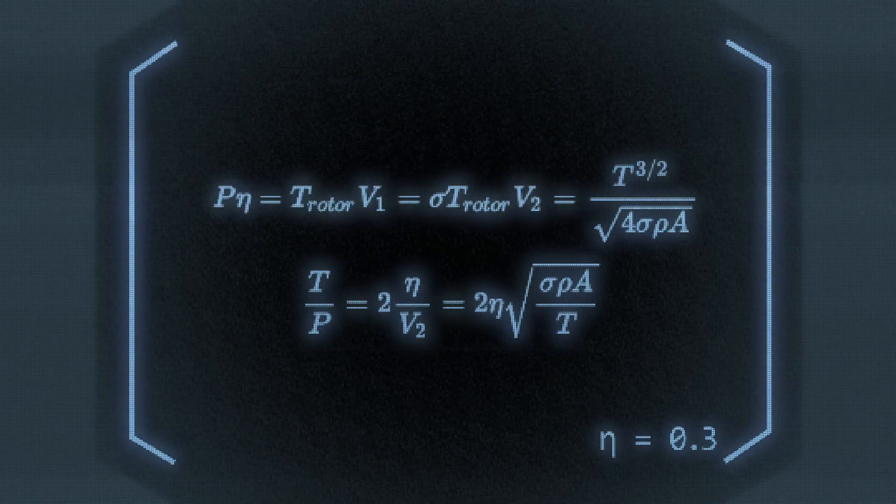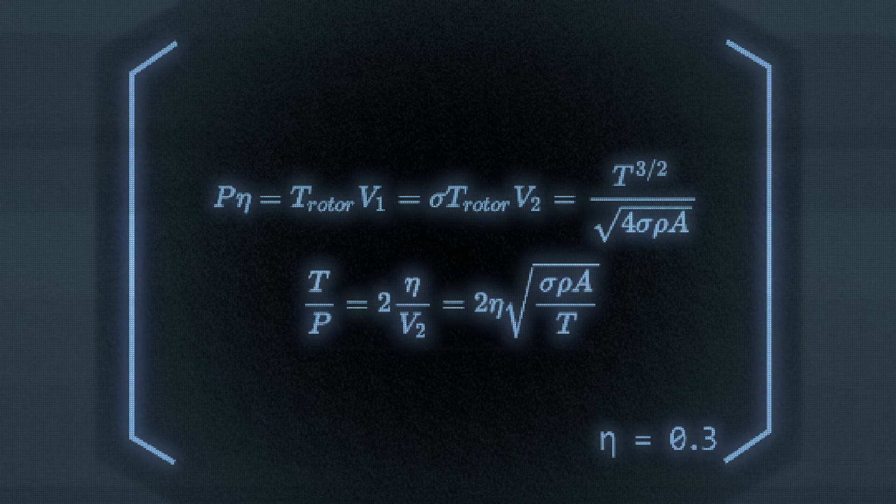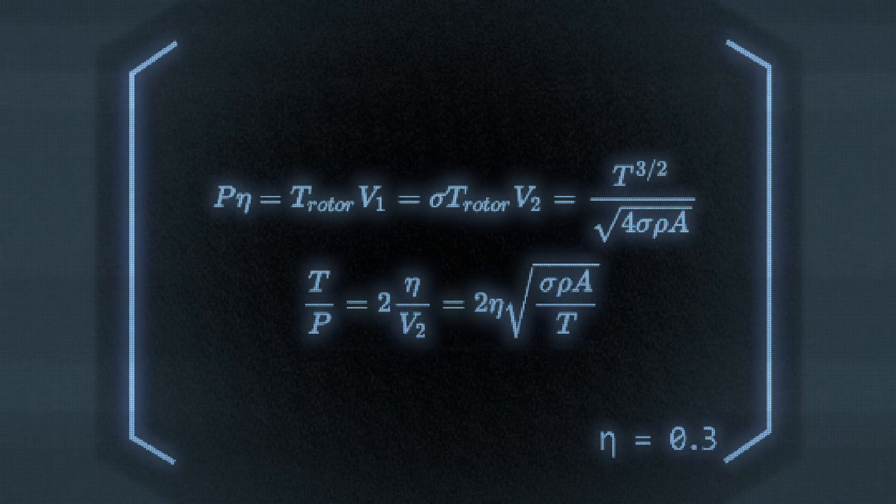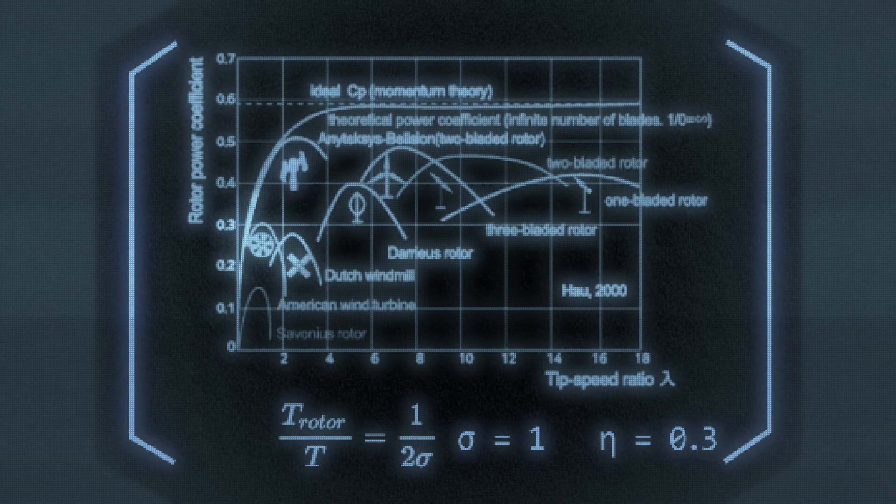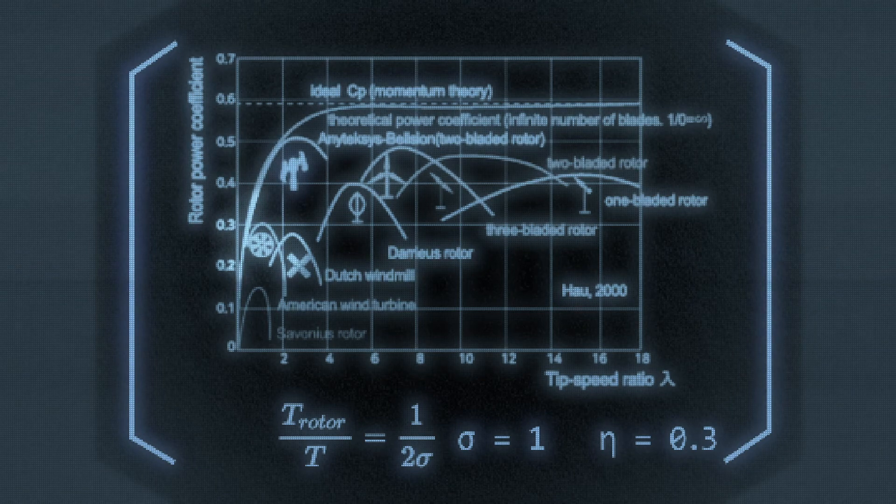The next step is to calculate the power of the lift fans with this formula and lift efficiency with this formula. With the larger the value the better, assuming a rotor efficiency of 0.3 and a sigma value of 1 with this formula, because we're using ducted fans.